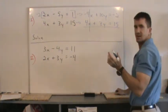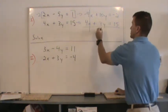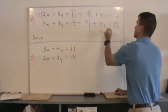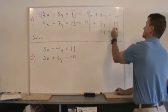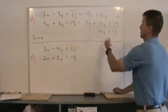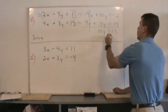That's 0x. 10 plus 3 is 13. I got 13y. Negative 2 plus 15 is 13. We can solve that. Divide 13 on both sides. y equals 1.